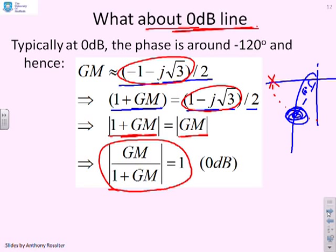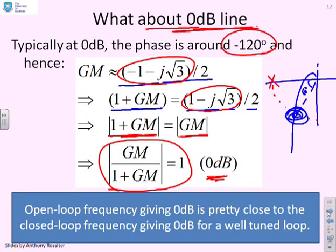There's an interesting observation. If your open loop has an angle or phase of minus 120 degrees where the gain is 1, then the closed loop Bode will also have a gain of 1. So the open loop frequency giving 0dB is pretty close to the closed loop frequency giving 0dB. We've emphasized again here for a well-tuned loop.